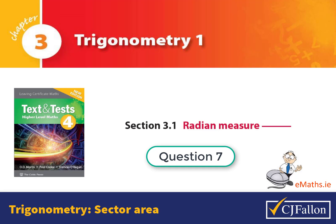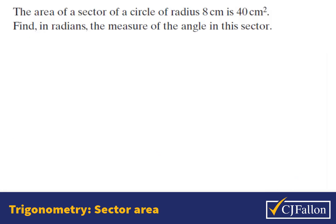Section 3.1, Question 7, using the area of a sector formula. This question asks us to find the angle in radians of a sector that has a radius of 8 cm and an area of 40 cm squared.